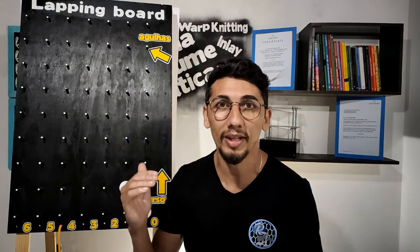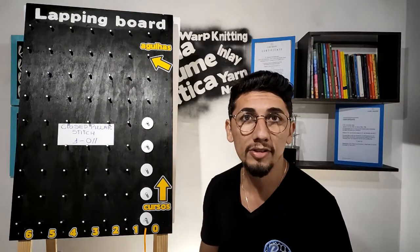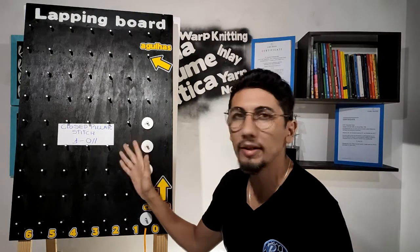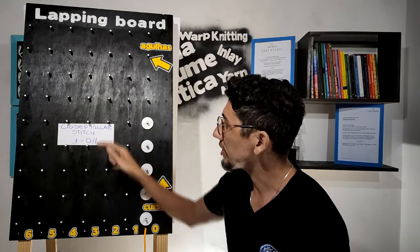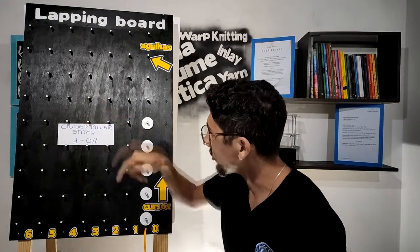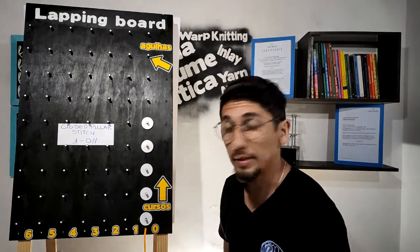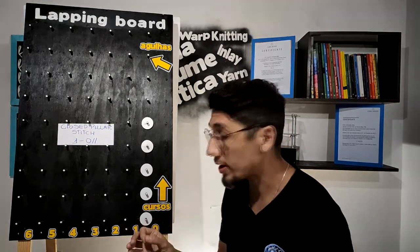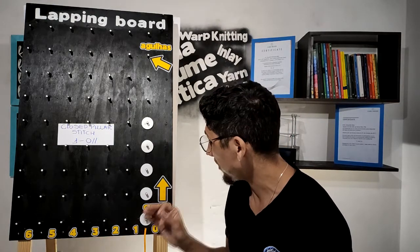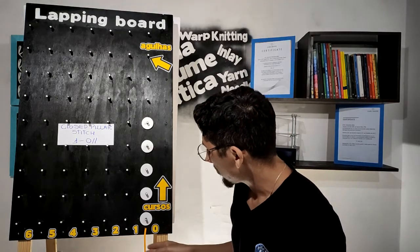Let's start with the closed pillar stitch, which has the chain notation one-zero. In this lapping, the guide bar always places the same yarn around the same needle.